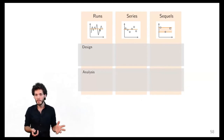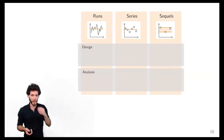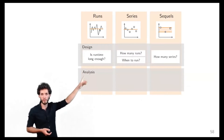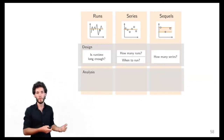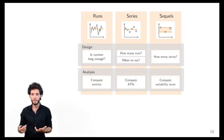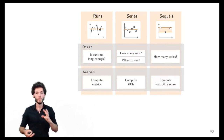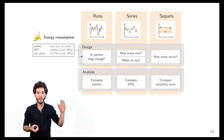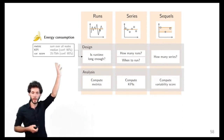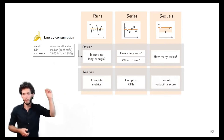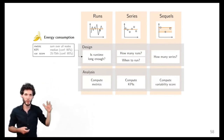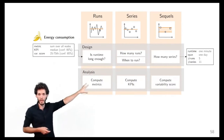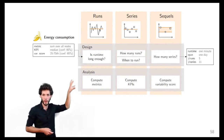TriScale looks like this: we have three timescales on one axis, and two pipelines. At the top is the design pipeline with four questions: is the runtime long enough, how many runs, when should we run (what's the time span), and how many series. These map to specific questions in the data analysis pipeline. You feed in your protocol — say, assessing the energy consumption of Banana — define your metric, your KPI, and a variability score. I'll explain how those are chosen. You pipe this through the design and get guidance on answers to those four questions.